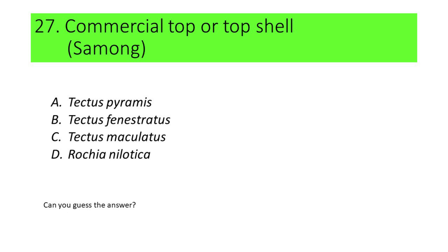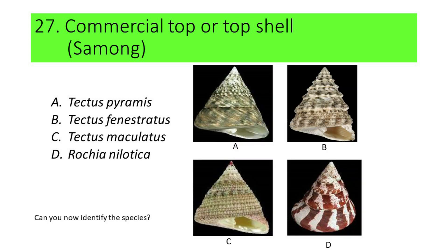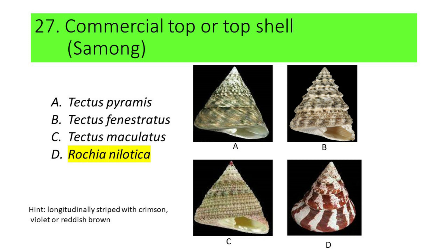If not, here are the pictures. A. Tectus pyramis, B. Tectus fenestratus, C. Tectus maculatus, and D. Trochus nilotica. Can you now identify the species? If not, here's another hint. The shell of this species is longitudinally striped with crimson, violet, or reddish brown. If your answer is D or Trochus nilotica, you're correct. Trochus nilotica is commonly called commercial top or top shell.